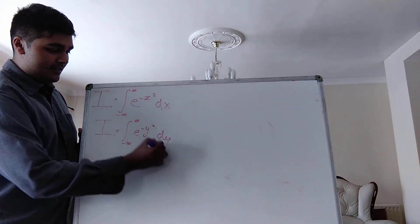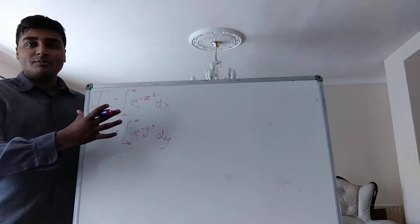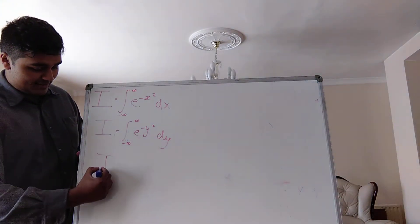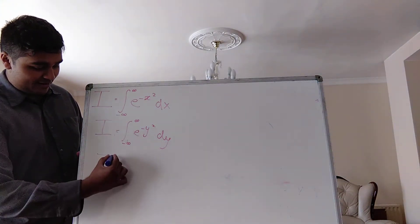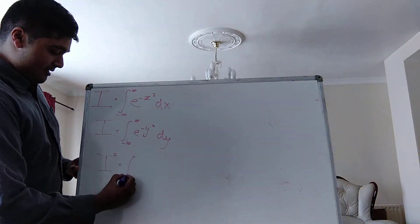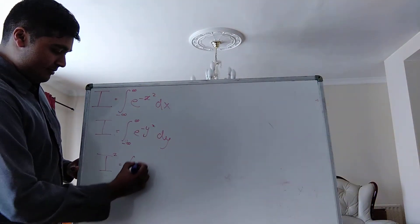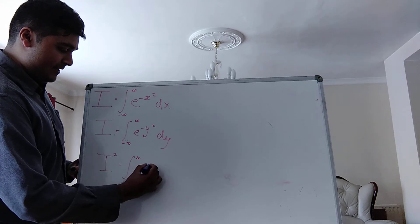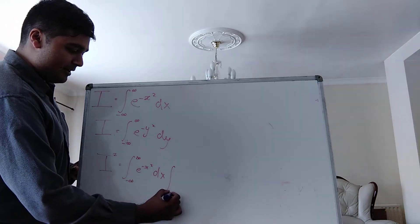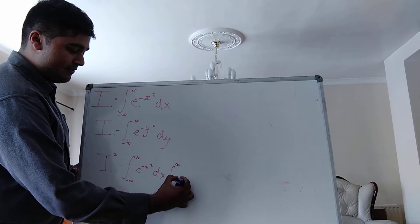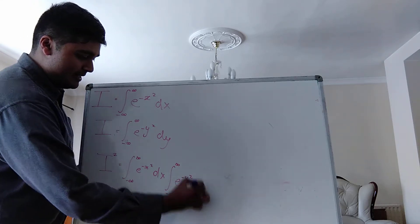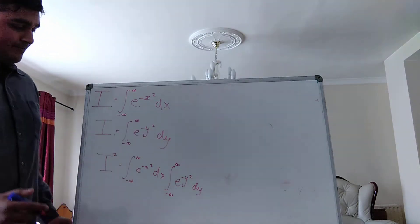Now what I'm going to do is multiply both sides together. On the left-hand side I get I squared. And when I multiply these two integrals together, I get the integral from negative infinity to infinity of e to the negative x squared dx, multiplied by the integral from negative infinity to infinity of e to the negative y squared dy.